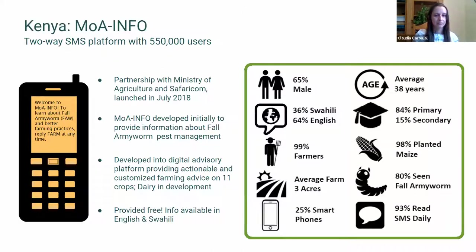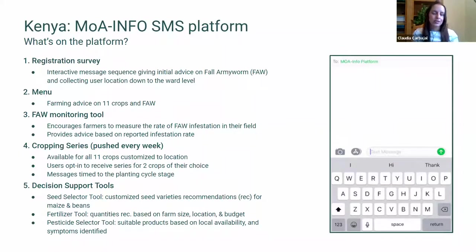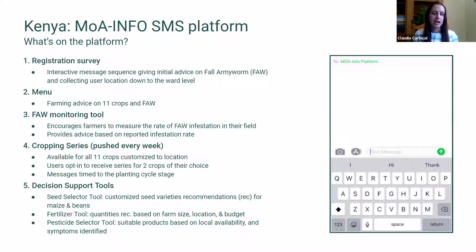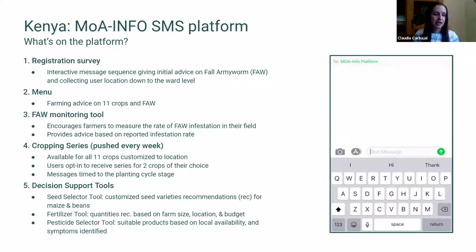We've been able to learn a great deal from farmers subscribed to the service and use this information to iterate and expand. The platform allows farmers to pull content when looking for information about crop production or pest control, and they also receive push messages. PAD has developed several decision support tools to help farmers optimize their decision-making — including a seed selector tool that uses farmers' location and preference for maturity duration to recommend the most suitable varieties of maize and beans, as well as a pesticide tool and a fertilizer tool.